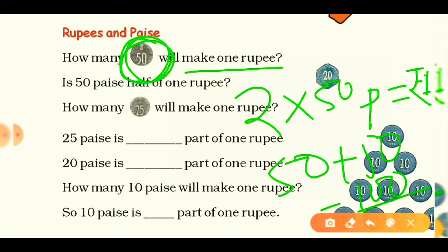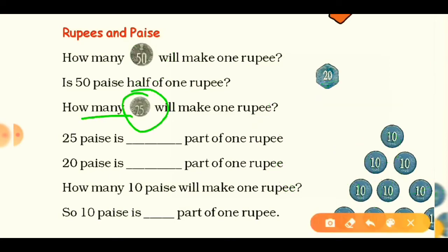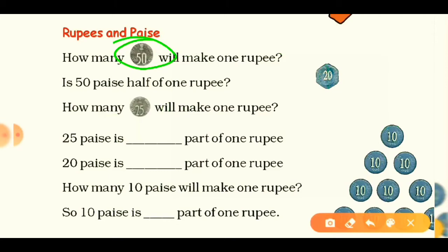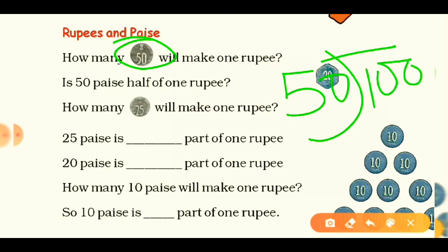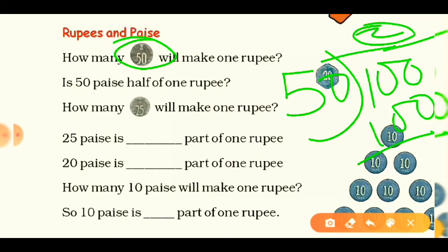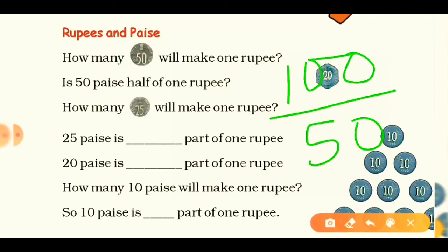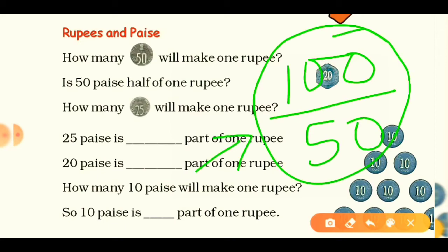How many 25 paise will make one rupee? You divide 100 paise by 25, and you get 4. So four coins of 25 paise make one rupee. Similarly for 50 paise: 100 divided by 50 gives 2 coins. We are dividing because fraction means division — 100 paise divided by 50 paise is a fraction number.